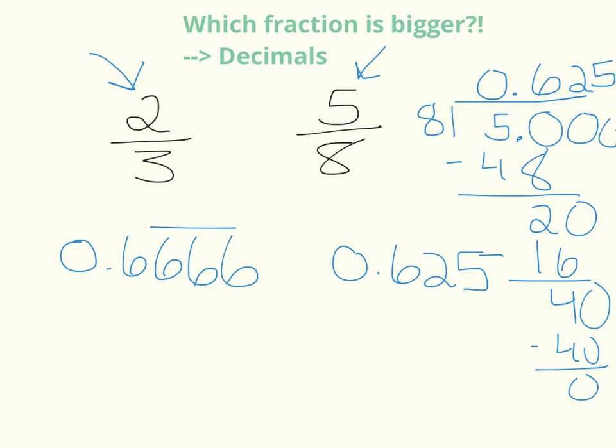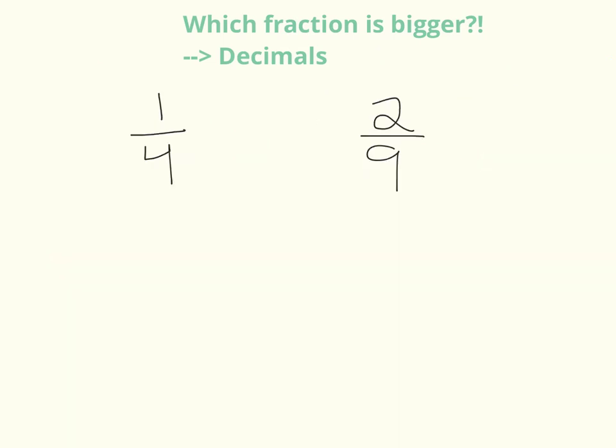So let's compare, compare decimal place by decimal place. So I have a six compared to a six, so they're tied. But then I have a six and a two, so this fraction is larger. Two-thirds is larger than five-eighths.